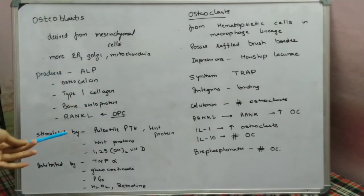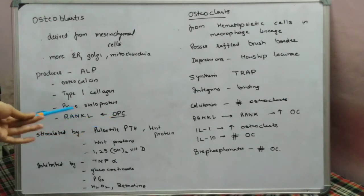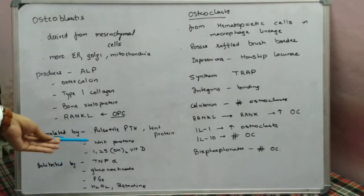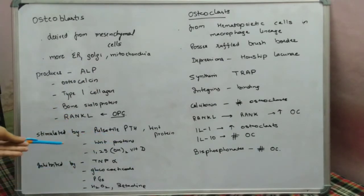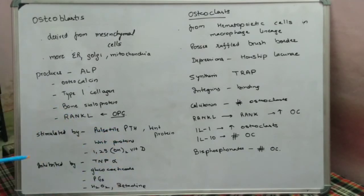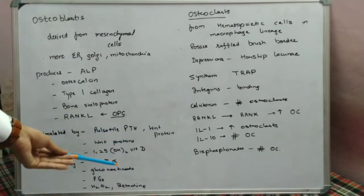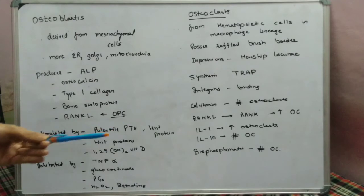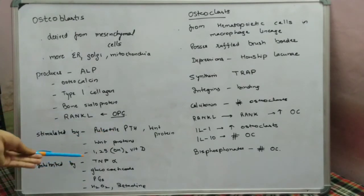Osteoblasts are also stimulated by Wnt proteins and by 1,25-dihydroxy vitamin D. They are inhibited by tumor necrosis factor alpha, glucocorticoids (steroids), prostaglandins, and hydrogen peroxide. These are the things that inhibit the function of the osteoblast.